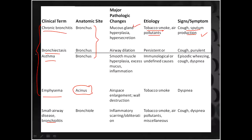Bronchiectasis — as its name shows, ectasis means airway dilatation. Bronchiectasis is caused by diseases like Kartagener's syndrome and military tuberculosis. In Kartagener's syndrome you are unable to remove mucus or smoke particles, leading to the development of bronchiectasis. So there is a permanent airway dilatation in bronchiectasis.